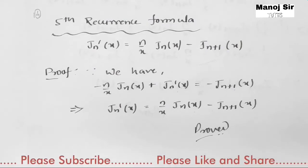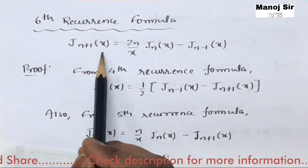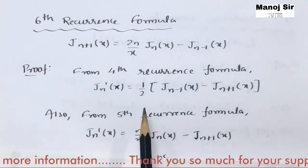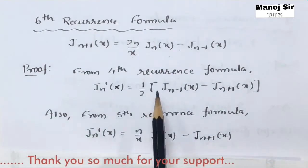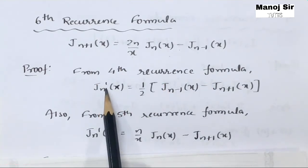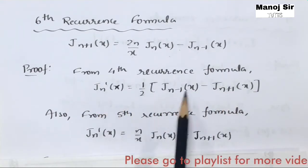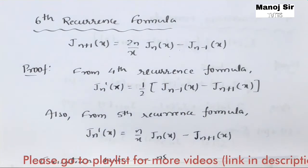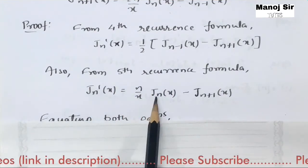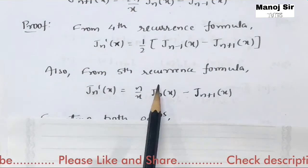Now we will try to prove the sixth recurrence formula. From the fourth recurrence formula we have: jn'(x) equals half of jn-1(x) minus jn+1(x). From the fifth recurrence formula we have: jn'(x) equals n upon x times jn(x) minus jn+1(x).